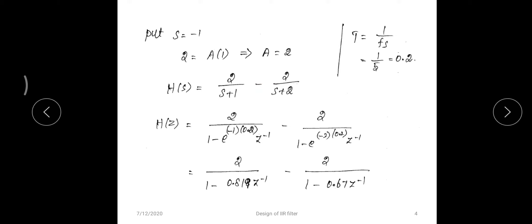Substituting the pole values and T = 0.2 into the formula: for the first term, the pole is -1 and T = 0.2; for the second term, the pole is -2. Computing e^(-0.2) and e^(-0.4) using a calculator gives the two terms of H(z) as 2 / (1 - 0.819·z^(-1)) minus 2 / (1 - 0.67·z^(-1)).